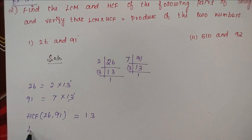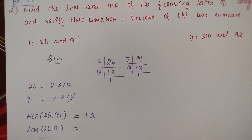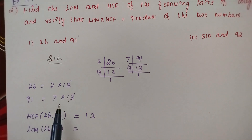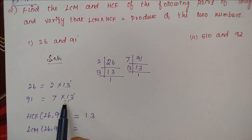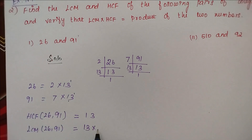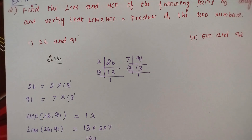Next, LCM of 26 and 91. The LCM is the common factor with the highest power multiplied by the remaining factors. The common factor is 13, and the remaining factors are 2 and 7. So LCM equals 13 into 2 into 7, which is 182.